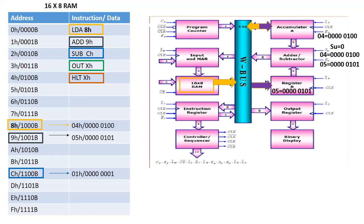The addition result is 09H. This value is then sent via the W bus back to accumulator A. That completes the addition operation — thank you, that's it for this video.